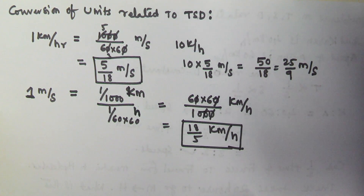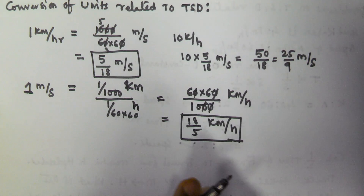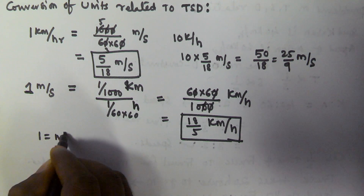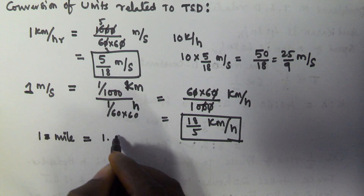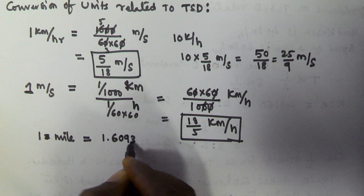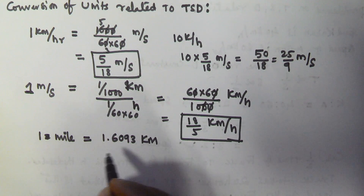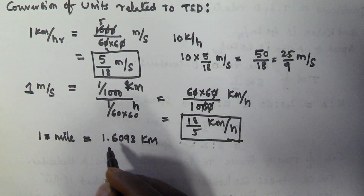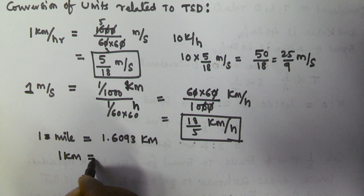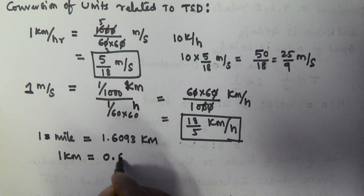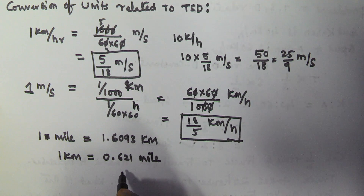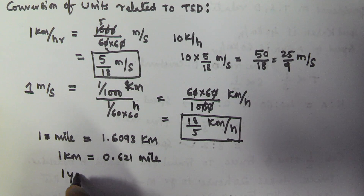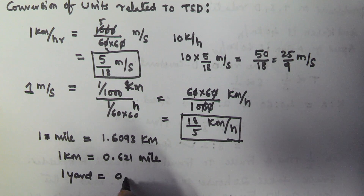Other things to remember in time, speed, and distance: one mile is equivalent to 1.6093 kilometers, and one kilometer is equivalent to 0.621 miles. Also, one yard is equivalent to 0.9144 meters. These are the unit conversions you need to remember.